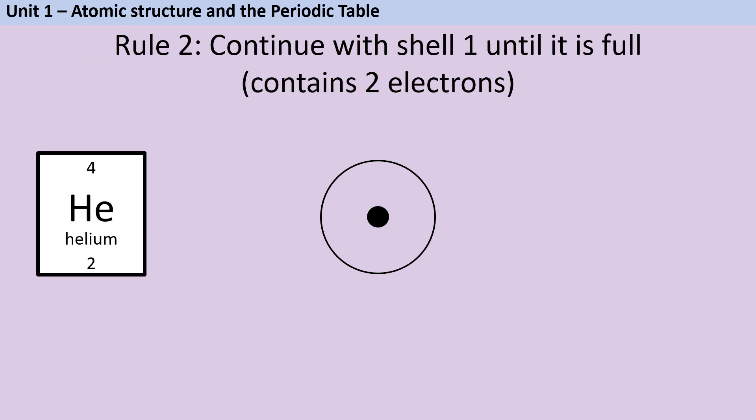The number of electrons for any particular atom will be the same as its atomic number. So helium is going to contain two electrons and we're going to place these electrons as close to the nucleus as we can. Because this first shell can contain up to two electrons we're not going to start a second shell, we're going to continue with this first shell.